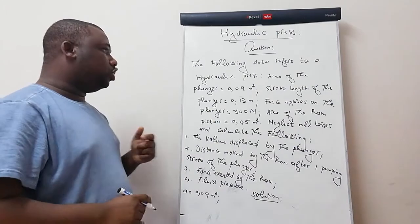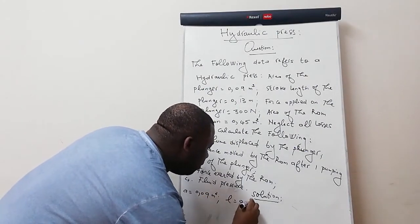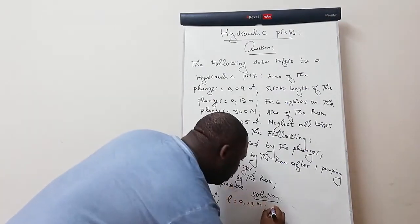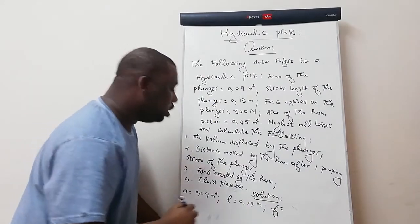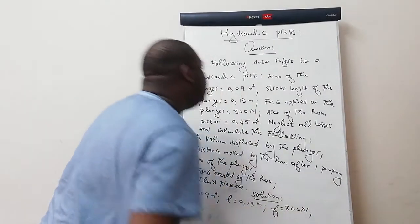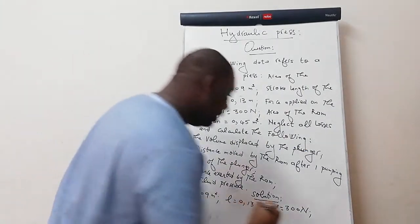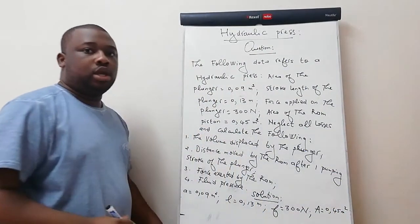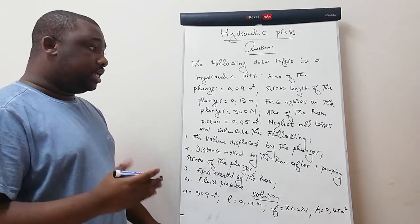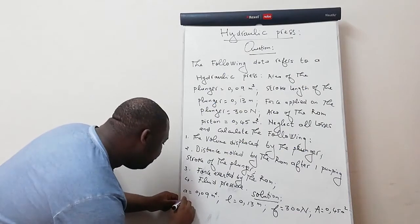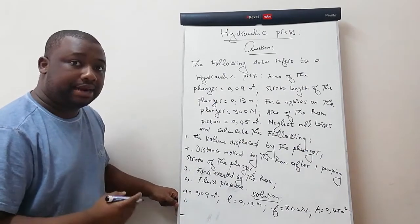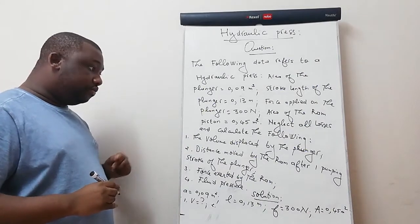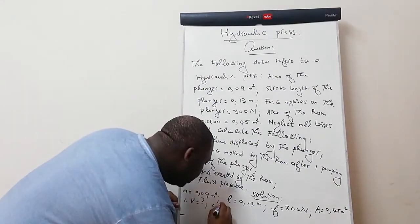The question states: the following data refers to a hydraulic press. Area of the plunger: small a = 0.09 m². Stroke length of the plunger: small l = 0.13 m. Force applied on the plunger: small f = 300 N. Area of the ram: big A = 0.45 m².